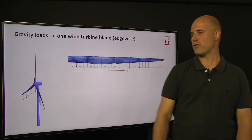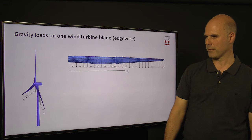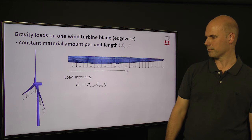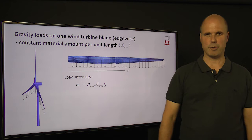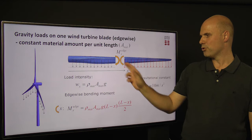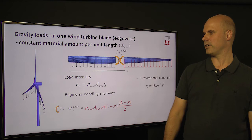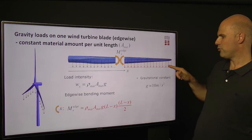In order to make a wind turbine blade, we need to have some materials, and this will generate a gravity load on the wind turbine blade. This loading will be in the edgewise direction of the blade, as illustrated here on the wind turbine and on one blade. If we assume that the amount of material used is constant per unit length of the blade, then we have a uniformly distributed load. The intensity of this load can be written as a function of the density of the material, the amount of material used, and the gravitational constant g, equal to 10 m/s². The equation for the resulting moment in the blade material at a cross-section is shown here.